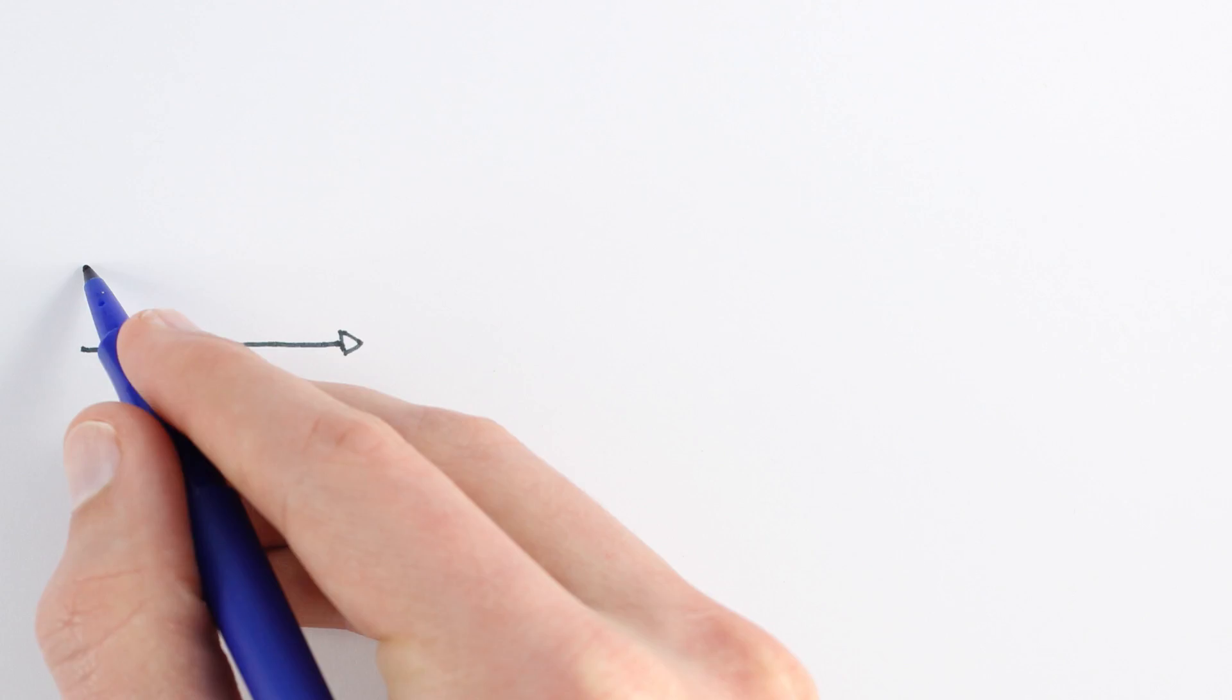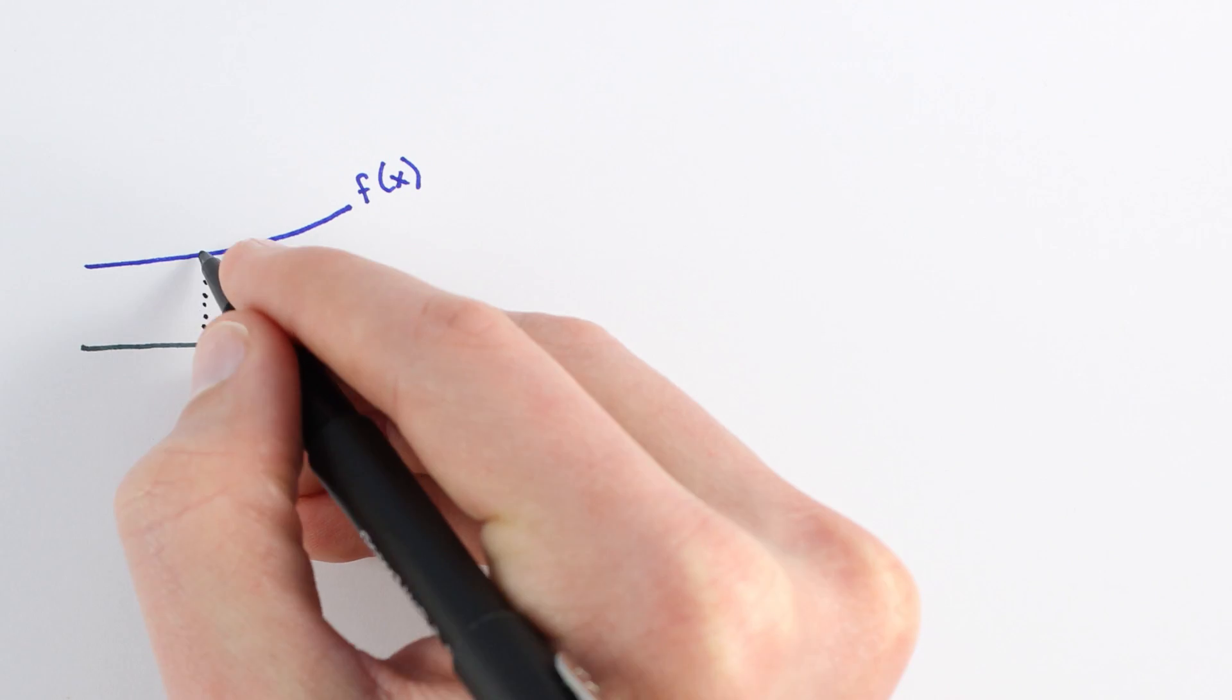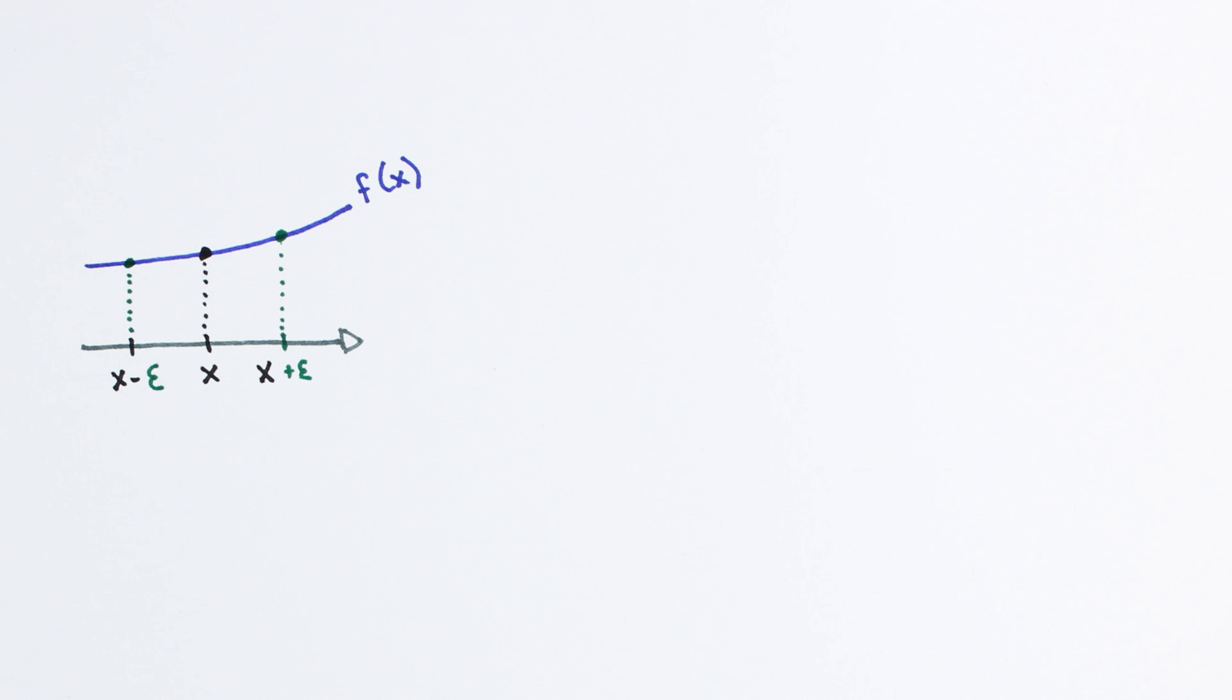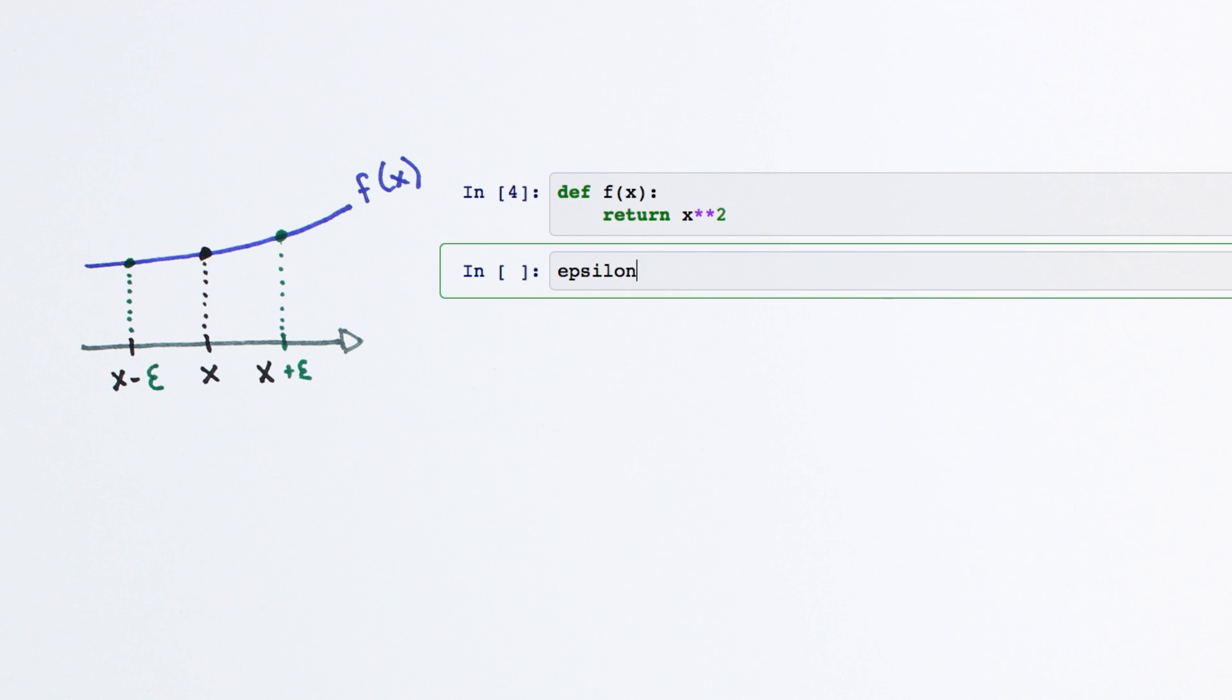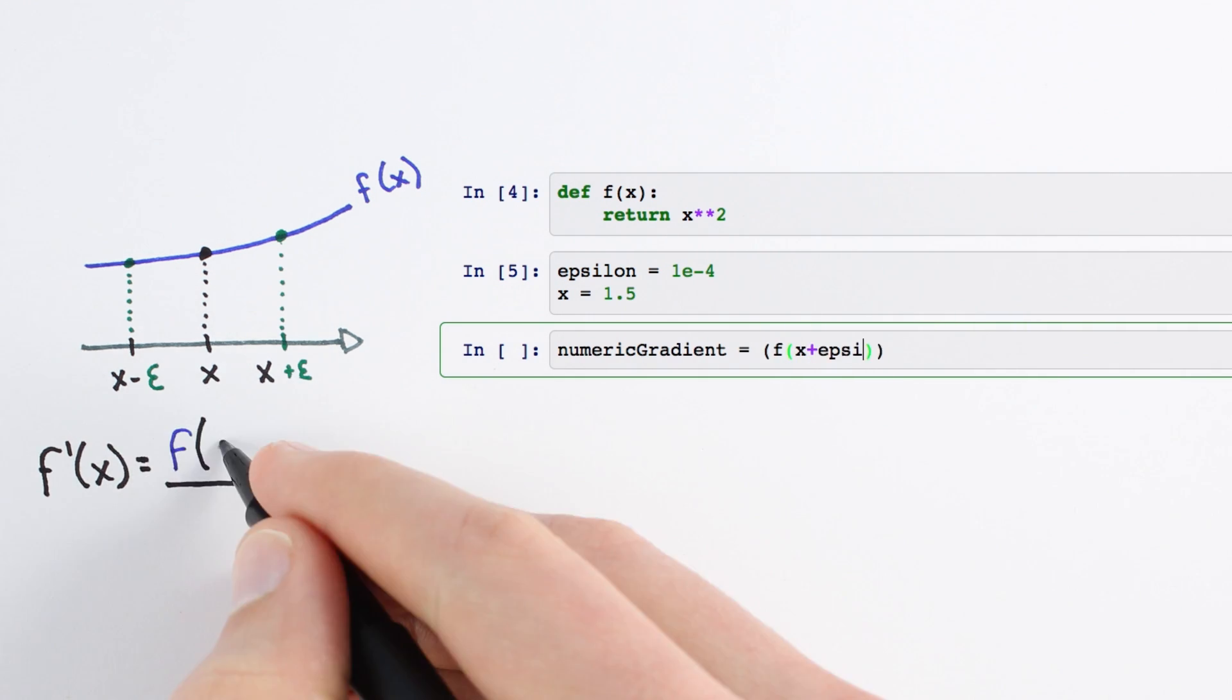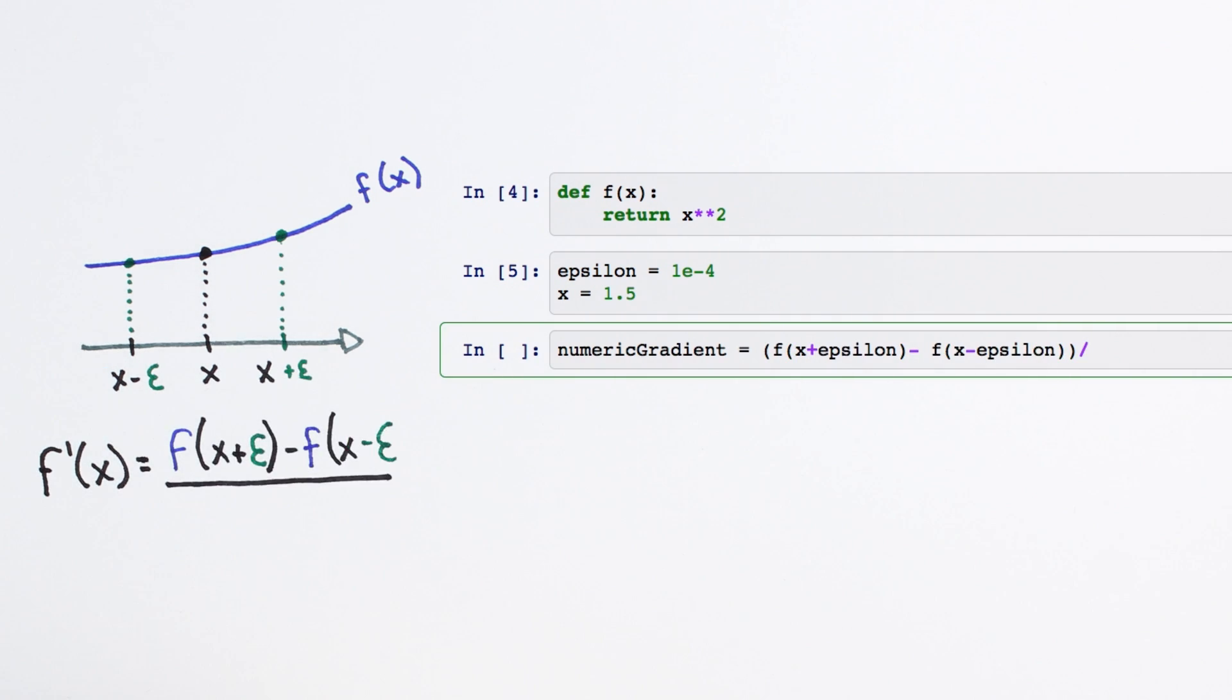We'll modify our approach slightly by picking a point in the middle of the interval we would like to test and call the distance we move in each direction epsilon. Let's test our method with a simple function x squared. We'll choose a reasonably small value for epsilon and compute the slope of x squared at a given point by finding the function value just above and just below our test point.